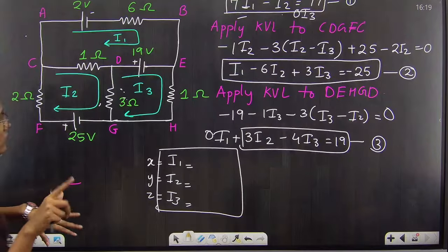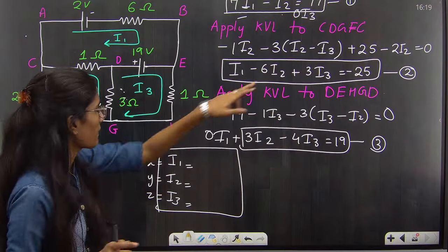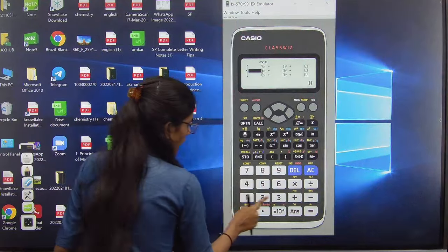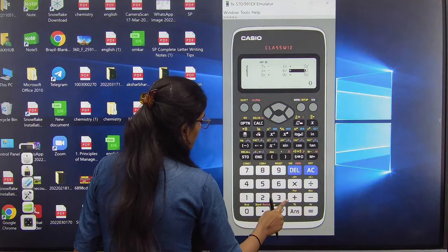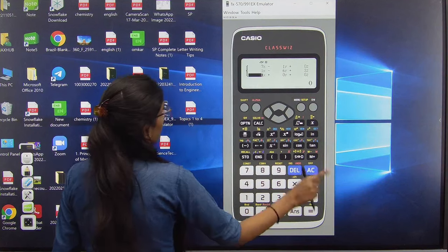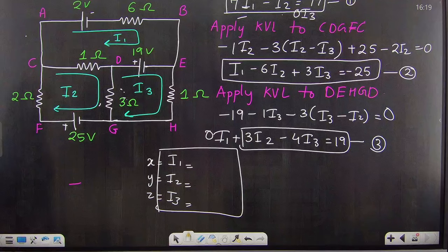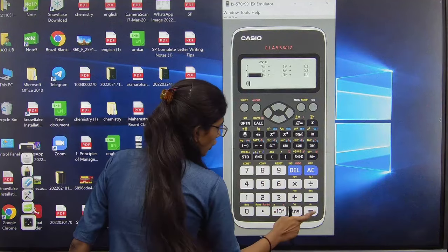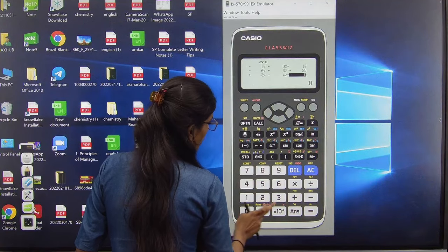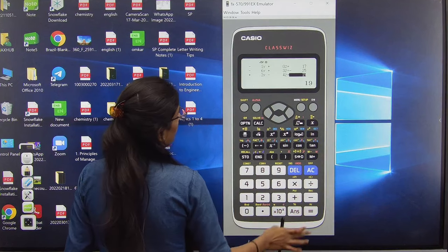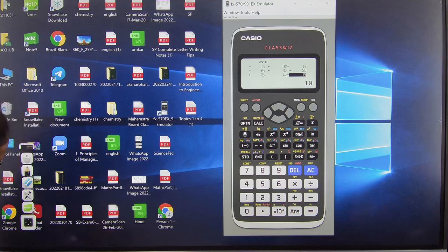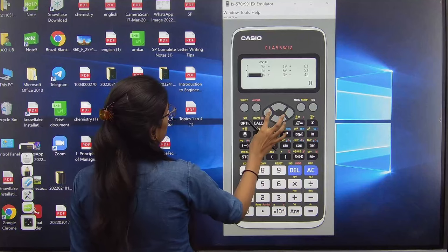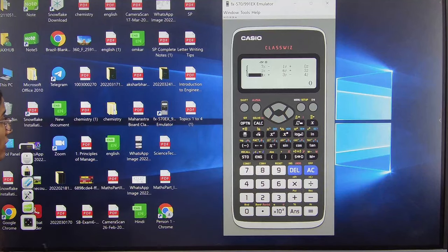First what is it? Seven, minus one, zero, seventeen. Very carefully putting here. The screen is glitching a bit. One, minus six, three, minus twenty-five. Now here: zero, three, minus four, nineteen. So all these values you have put in your calculator. Just check once that whatever values you have put are perfect. Yes, seven, one, zero. Yes, perfect. All values are perfect.